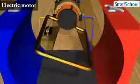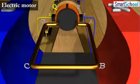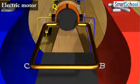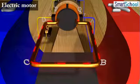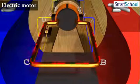At half rotation, Q makes contact with the brush X and P with brush Y. Therefore, the current in the coil gets reversed and flows along the path DCBA.